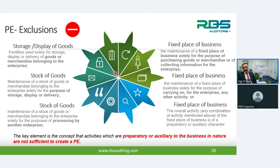Preparatory or auxiliary activities are not sufficient to create a PE. For example, if a company has a representative office in UAE that only collects documents and sends all information to the head office in India — like an ICICI Bank representative office that does not accept deposits but only collects documents — that is not treated as a PE.